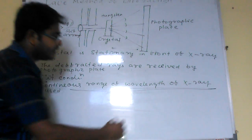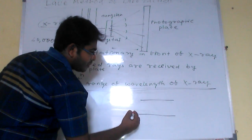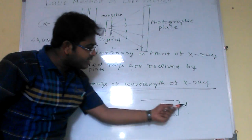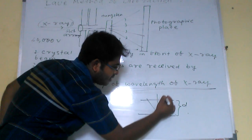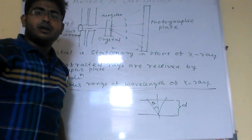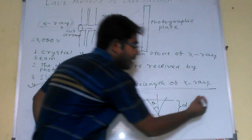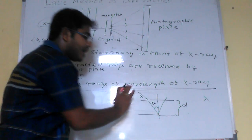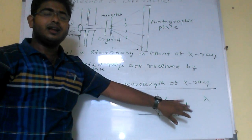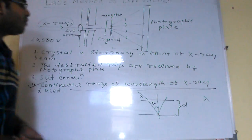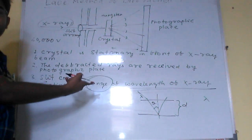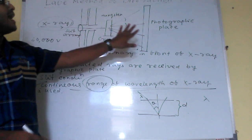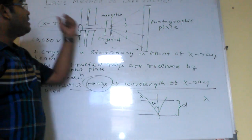In other words, there may be a pair of planes for which whatever may be the interplanar spacing d, and whatever may be the angle of incidence theta, there may be any one value of lambda — the wavelength of the incident ray — for which the Bragg condition can be satisfied. This lambda may be any one wavelength out of this wide range. So this is the schematic diagram and construction of the Laue method of diffraction.